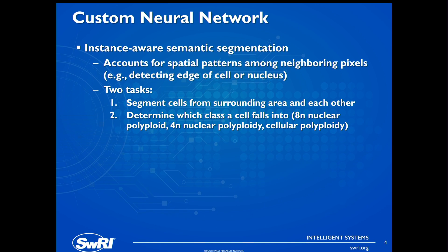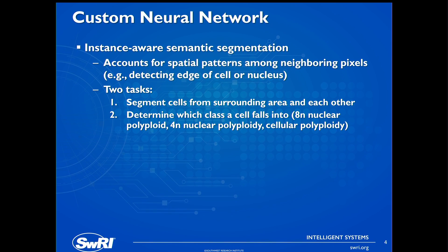We used a custom neural network with the goal of instance-aware semantic segmentation. We chose this because it accounts for spatial patterns among neighboring pixels in an image, which is particularly useful for detecting an edge of a cell or a nucleus. It also accomplishes the dual tasks of segmenting a cell from the surrounding tissue and other cells in the image.